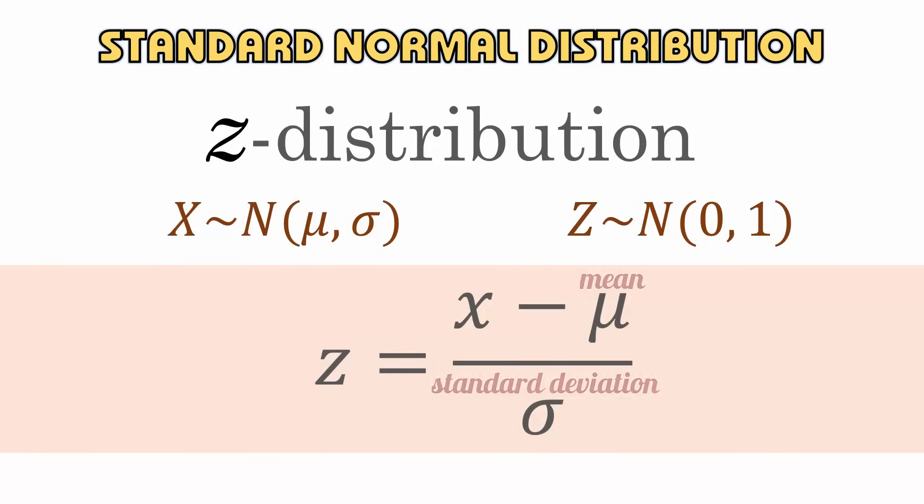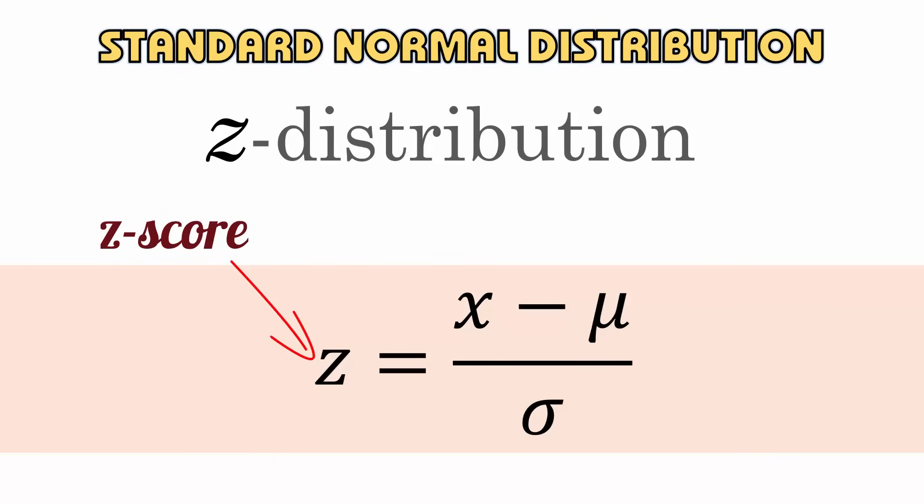The standard normal score, also known as the z-score or z-value, is the number of standard deviations a score x is from the mean.